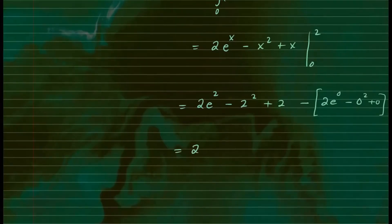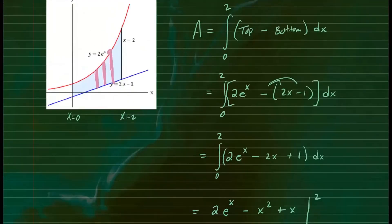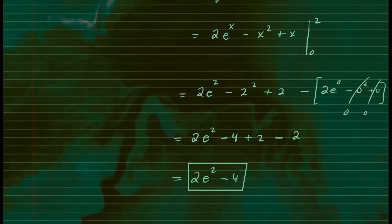Evaluating: this equals 2e to the 2 minus 4 plus 2, minus 2 times 1, since e to the 0 is 1. The 2 and negative 2 cancel out, and all of this simplifies to 2e to the 2 minus 4. So the area of this region is 2e to the 2 minus 4. To summarize: we constructed vertical rectangles, identified top minus bottom curves, integrated from 0 to 2, and the area is 2e to the 2 minus 4.